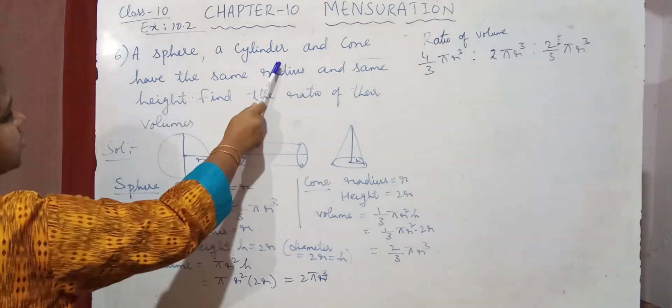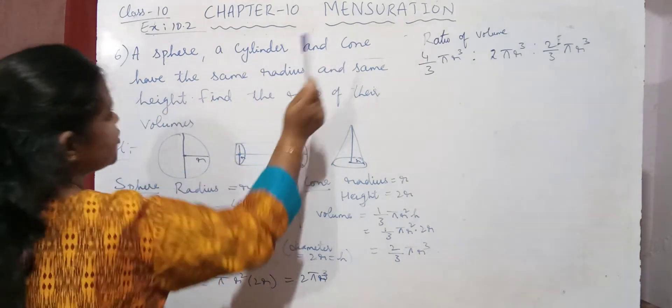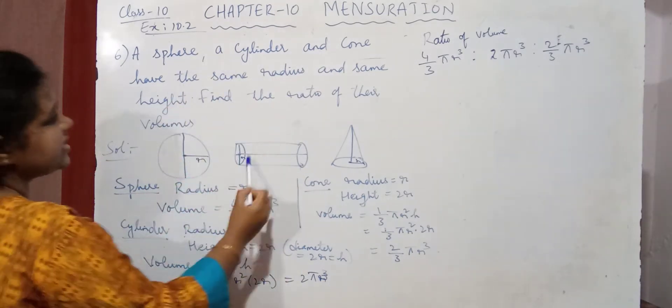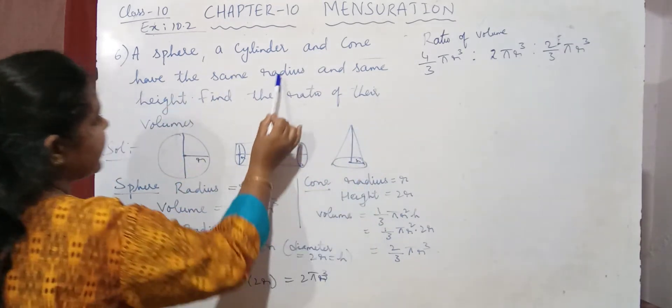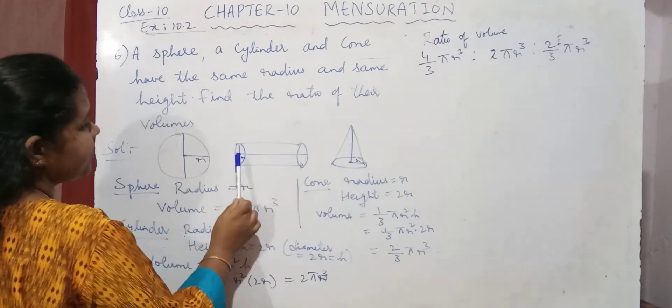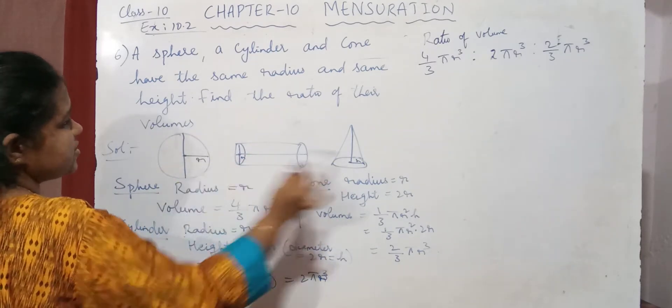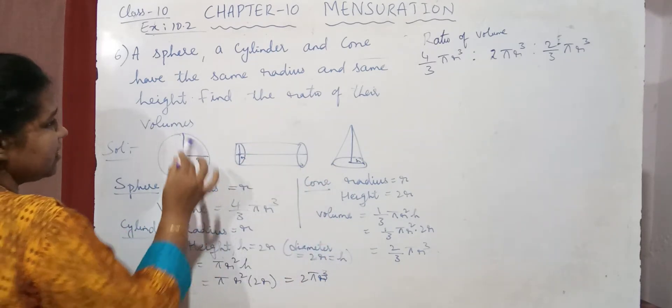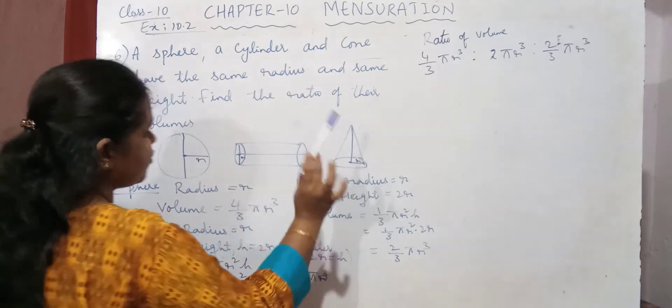So whenever such problems are given, the order in which they gave is very important. First sphere is given, then sphere, a cylinder and a cone. So the radius of all the 3 is same and the heights are also same. That is, this is the height of the sphere, this is the height of the cylinder, this is the height of the cone.